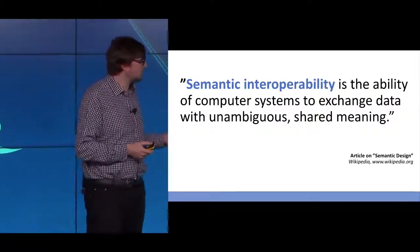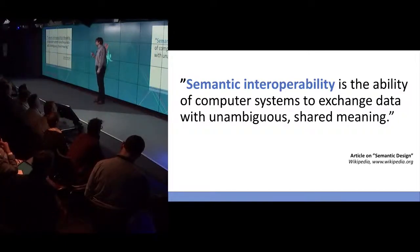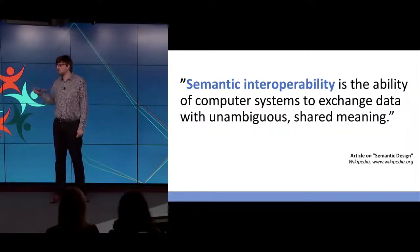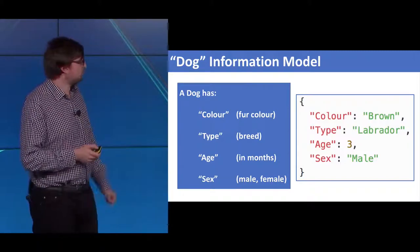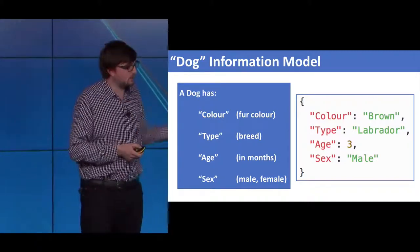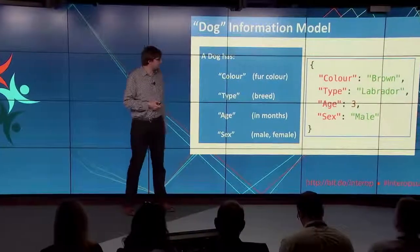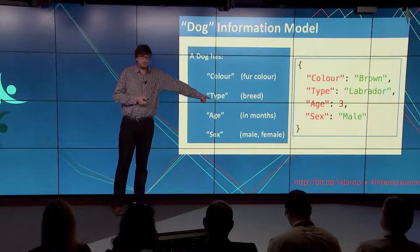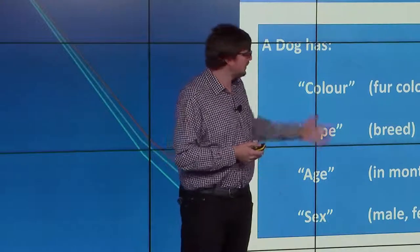Semantic interoperability is the ability of computer systems to exchange data with unambiguous shared meaning — a shared understanding that we've pre-agreed before we start transferring this data around. This is where what we heard from Ian and Di is so important. Information models and terminologies are the tools that allow us to have that unambiguous shared meaning. If we were going to create an information model for our dog, we might say a dog has a colour — which actually means fur colour. A type — meaning breed. An age — which is in months, not years, as we might have assumed. And a sex — either male or female. When we take that model and look at it alongside the data, we have meaning.